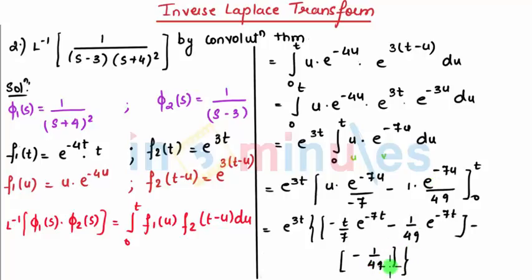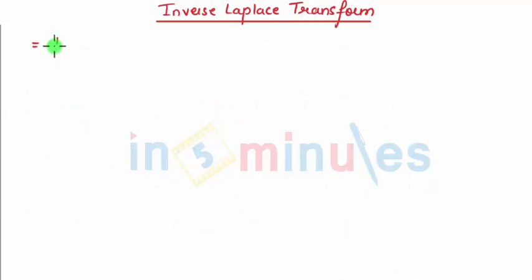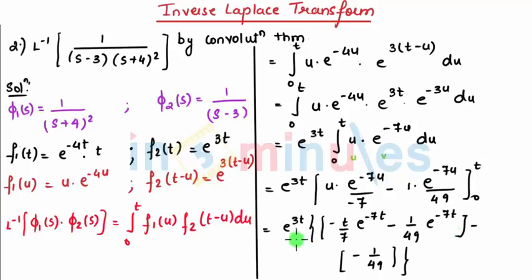So my final answer which I will be getting is 1 upon 49, e raised to 3t minus e raised to minus 4t minus 7t e raised to minus 7t. You need to solve this whole and multiply e raised to 3t inside you get a final answer as this.